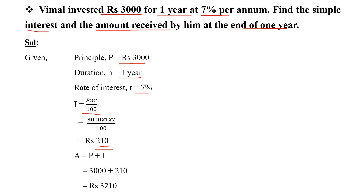Now we are going to calculate the amount. Amount is equal to principal plus interest. P plus I is equal to 3000 plus 210. Total amount is equal to Rs. 3210.